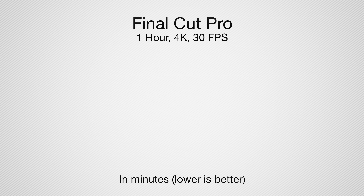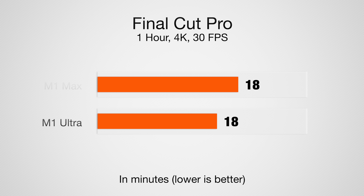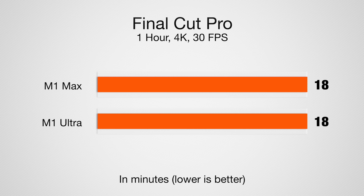Now those are all benchmarks, but what does that actually mean in terms of a real-world application? I exported a 4K, 30 frames per second, one-hour-long video inside Final Cut Pro on both machines. It took 18 minutes and 13 seconds on the M1 Max, and the M1 Ultra took a very similar 18 minutes and 22 seconds — basically within the margin of error. There wasn't much of a difference in that long file.